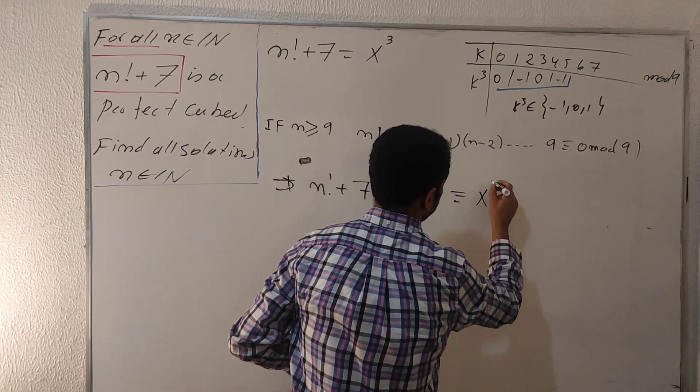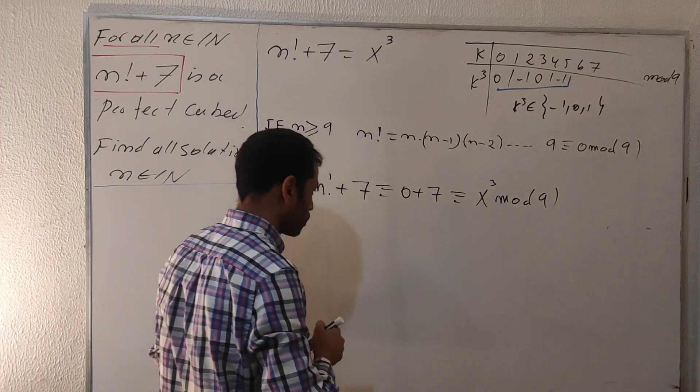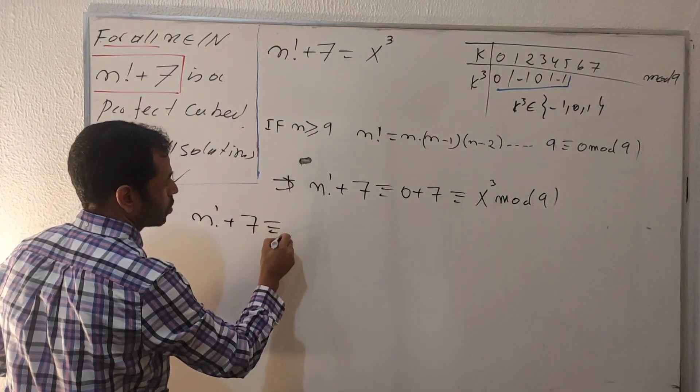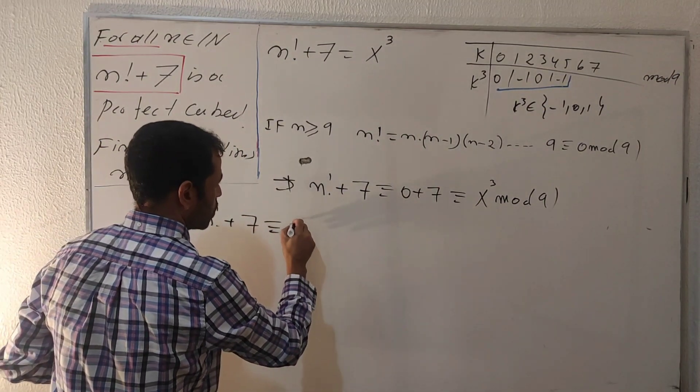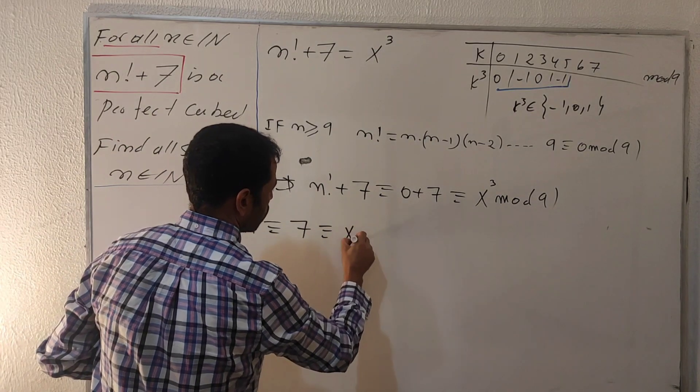This is congruent to x cubed mod nine. So finally we get n factorial plus seven is congruent to seven, congruent to seven mod nine.